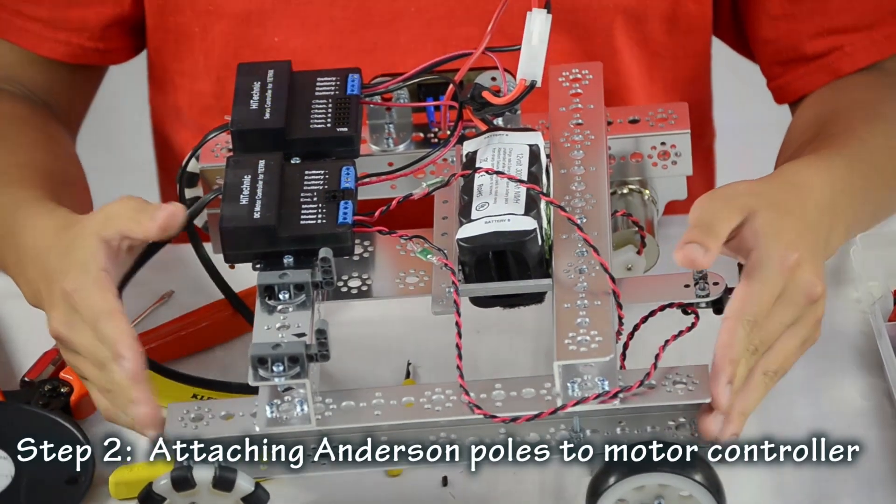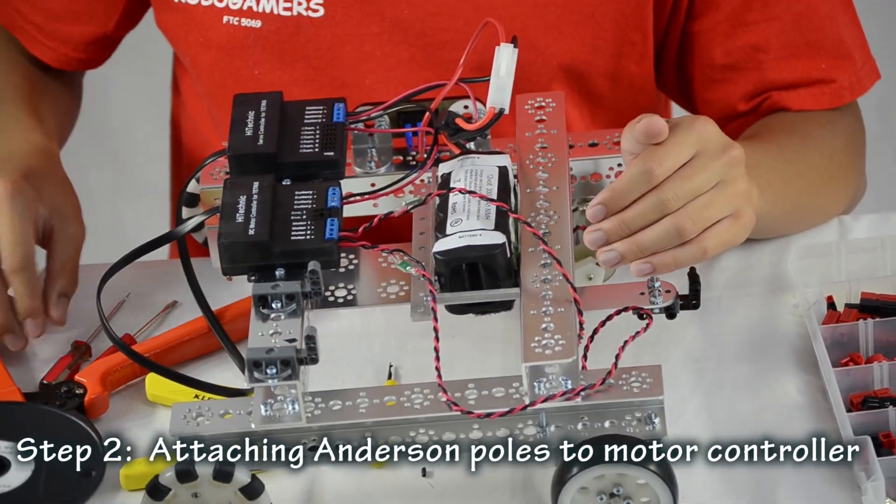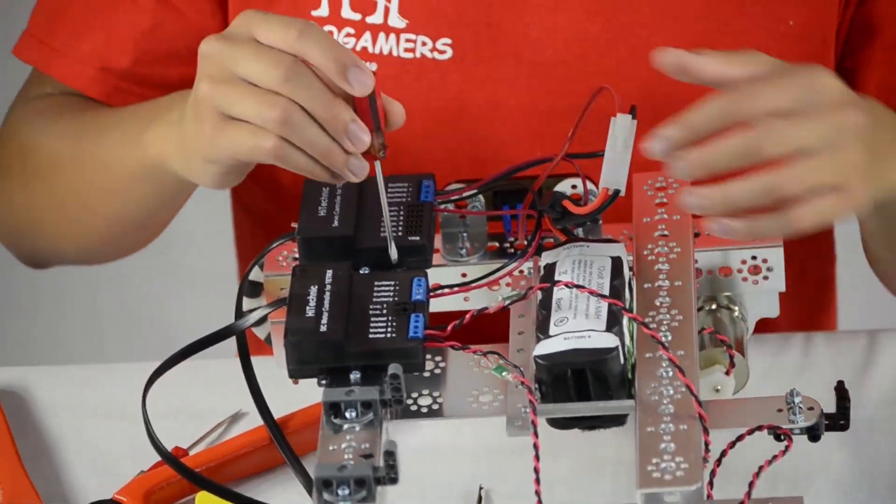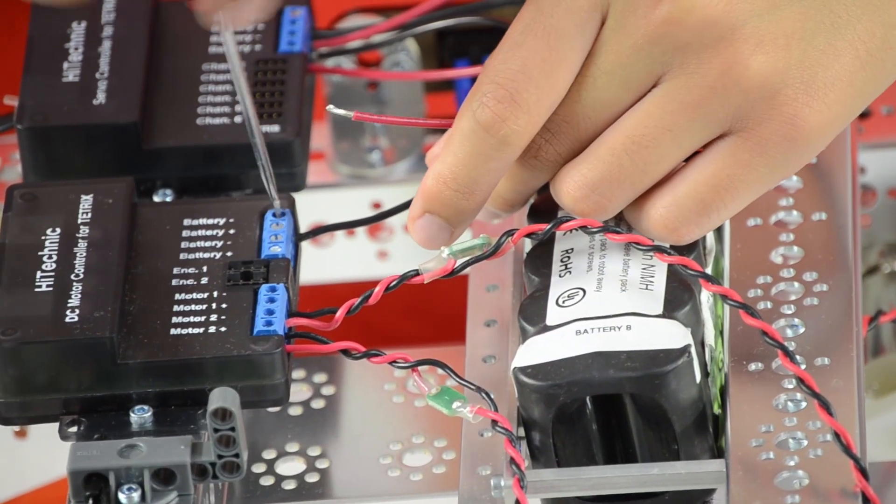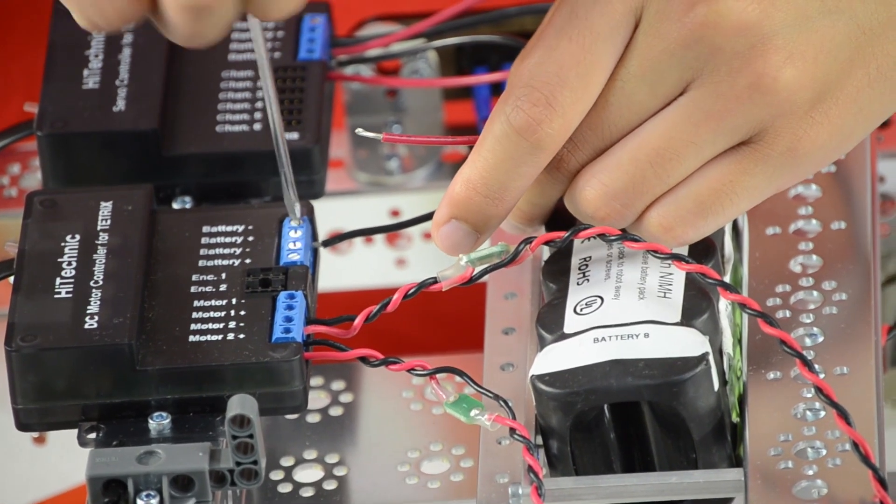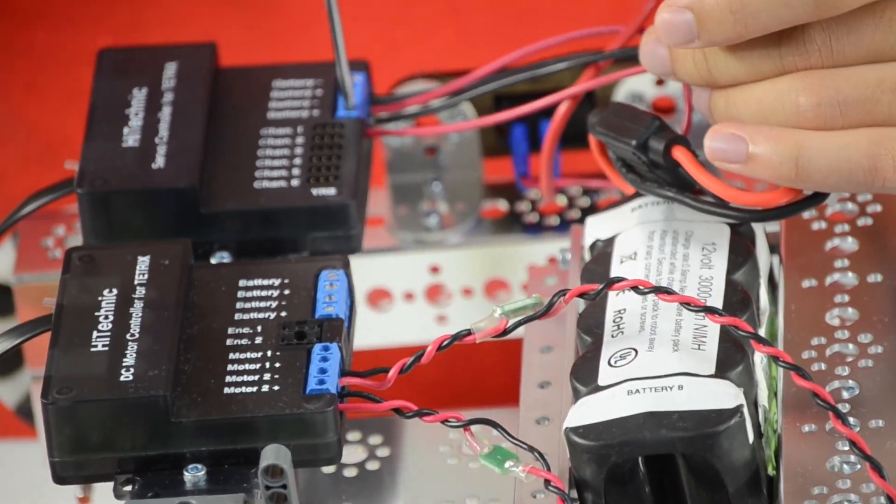Okay, so this is the Ranger robot that we built in the first video. I just took off some parts so that you could see the controllers more. So what you want to do is you want to take off these two wires, the red wire and the black wire. Because we won't be needing those anymore because we have the Anderson poles.